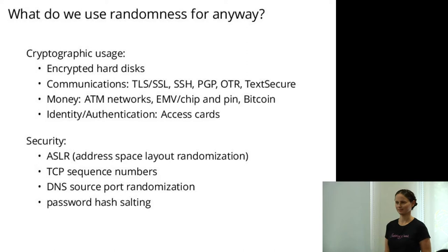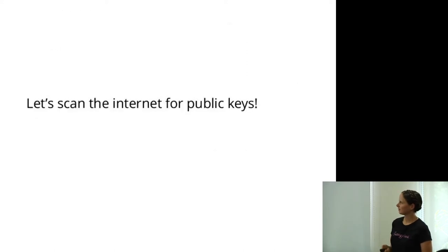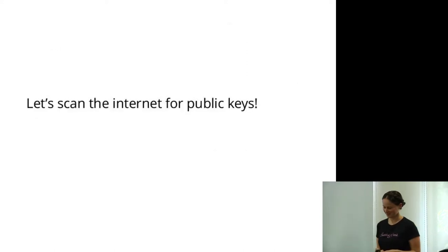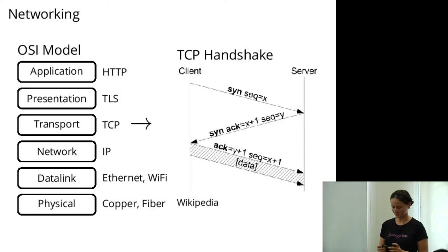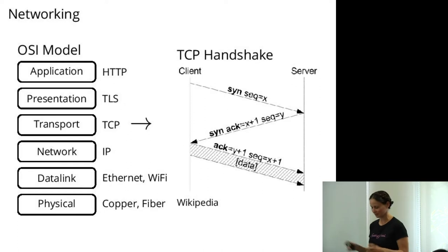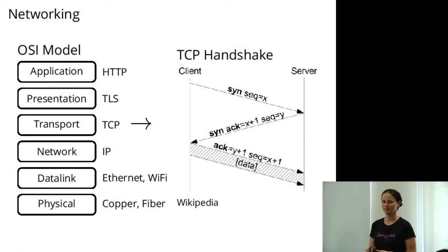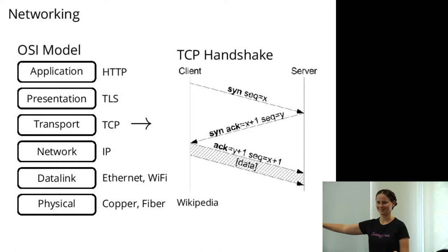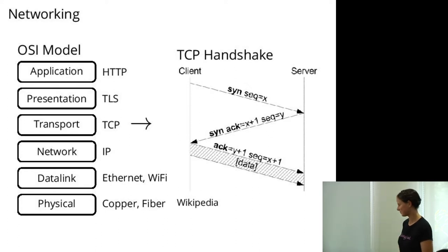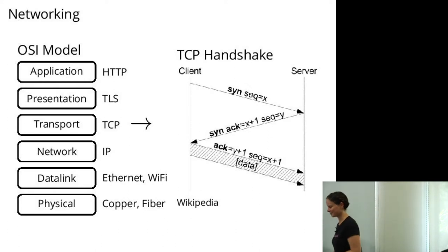Some of these things are much easier to get data on than others. In particular, everything that looks like a communications protocol — in some cases the public key infrastructure — lets us collect data. So the research idea is: let's scan the internet for public keys. It'll be fun. Here's a networking slide. I apologize — this is not cryptography. How many of you have never seen a slide like this before? Okay, everybody knows about networking.